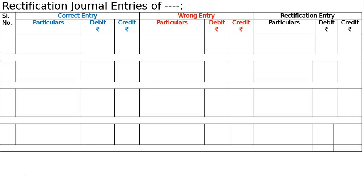The question states there was a difference of ₹720 in the trial balance, which has been transferred to the credit side of the suspense account as a balance brought down. We need to pass necessary rectifying entries and prepare a suspense account to rectify the following errors. An amount of ₹375 was posted on the debit side of commission instead of ₹275.